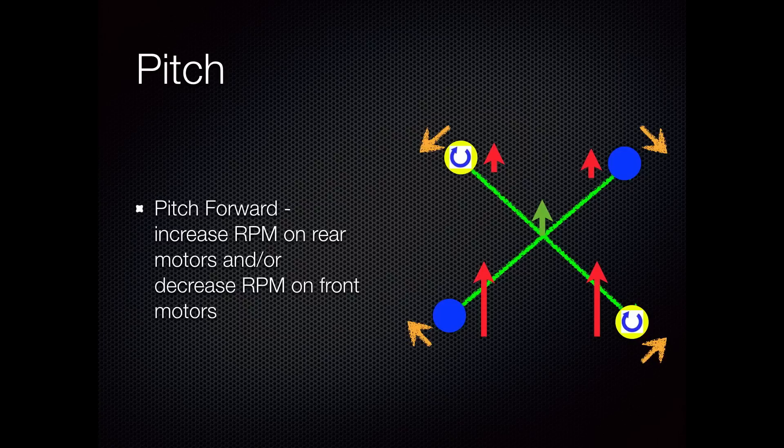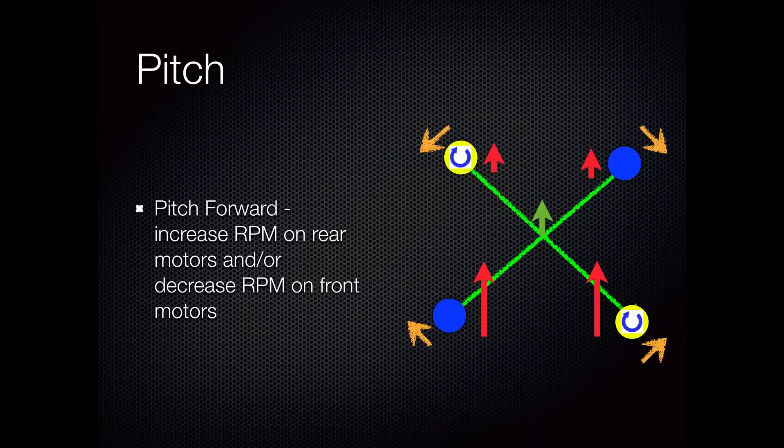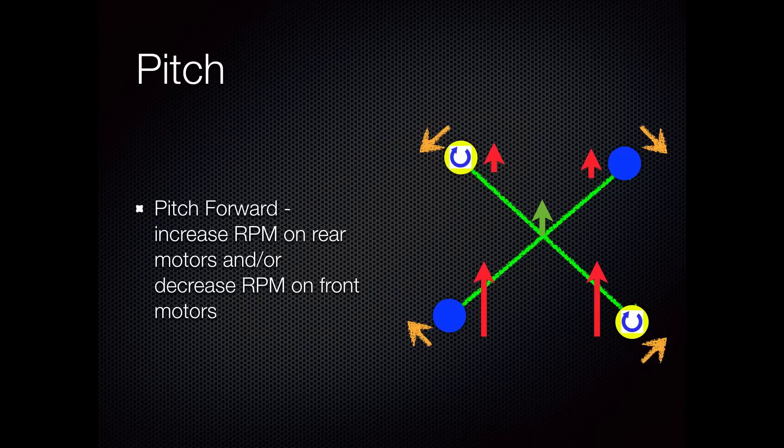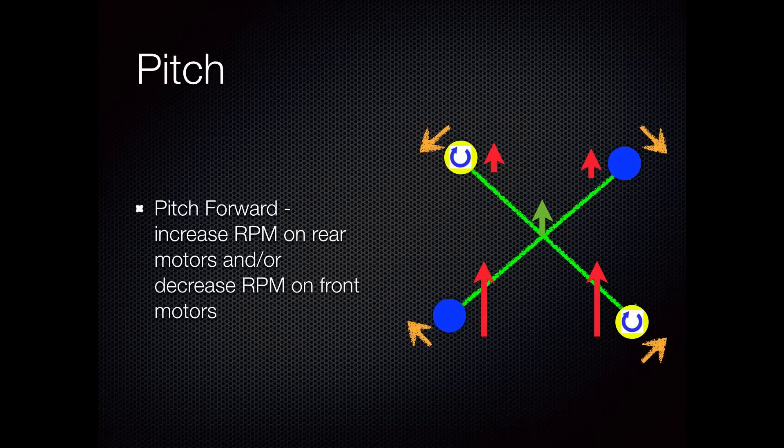It's a little hard to see in the illustration here, but if you'll notice, the red arrows on the rear of the quad rotor are larger than the ones on the front, which indicates there's more RPM in the rear. The little green arrow there right in the center is intended to show the direction of flight.